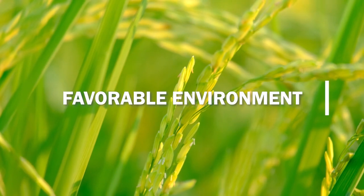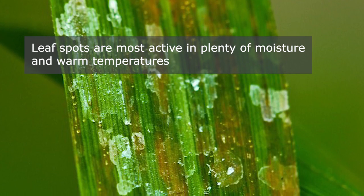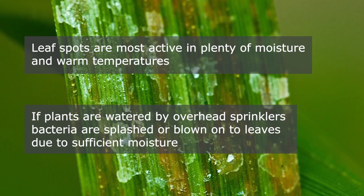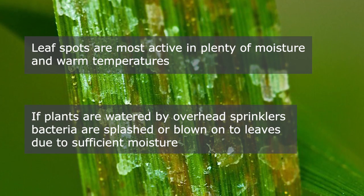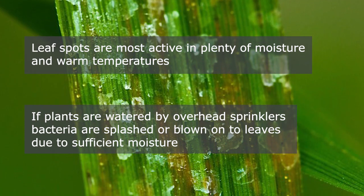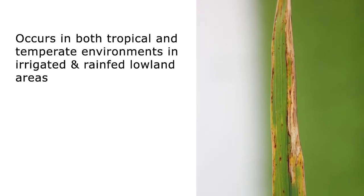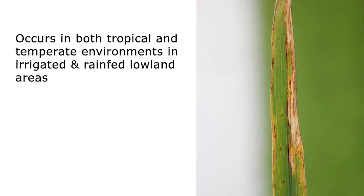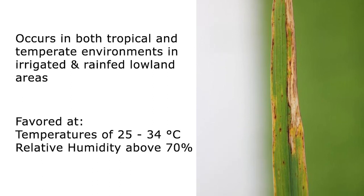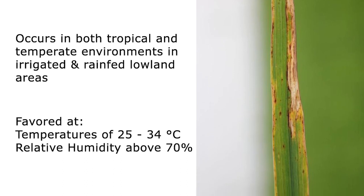Favorable environment: Leaf spots are most active when there is plenty of moisture and warm temperatures. During summer months, especially if plants are watered by overhead sprinklers, sufficient moisture may be present for infection when bacteria are splashed or blown onto leaves. The disease can occur in both tropical and temperate environments, particularly in irrigated and rain-fed lowland areas, and favors temperatures of 25 to 34 degrees Celsius with relative humidity above 70%.